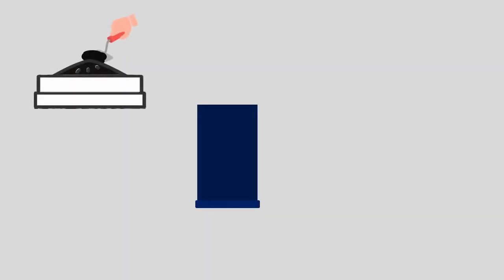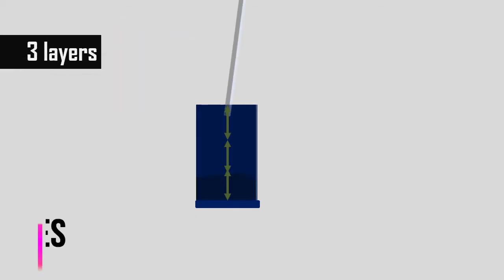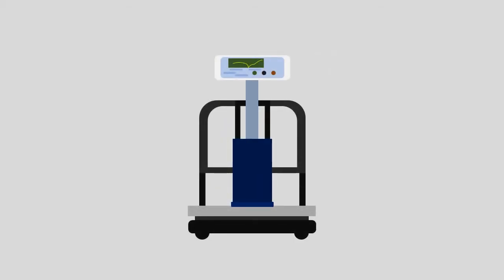The cylindrical measure is filled with 3 layers and each layer is tamped 25 times. Once filled, the surface of the level is struck off and the weight of aggregate in the measure is weighted using balance. Let it be W1.